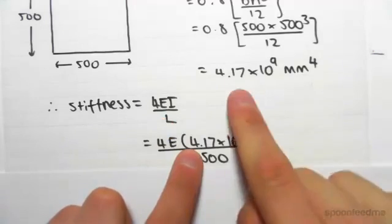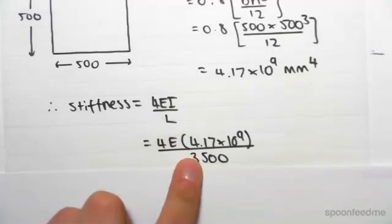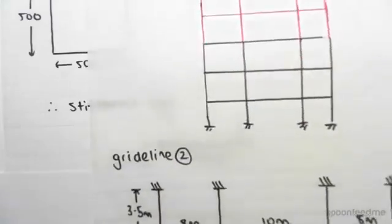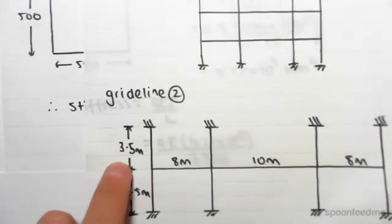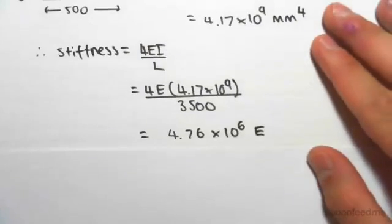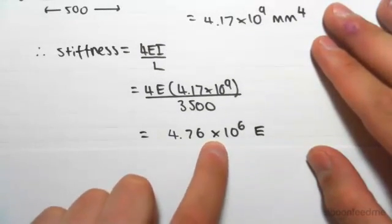It's 4 times E times the I value divided by the length. In the previous video, the interstory height was 3.5 meters, so this height is 3.5 meters, which is the length of the column, so 3500 millimeters. Working this out, we get an answer of 4.76 times 10 to the 6 E, where E is the elastic modulus.